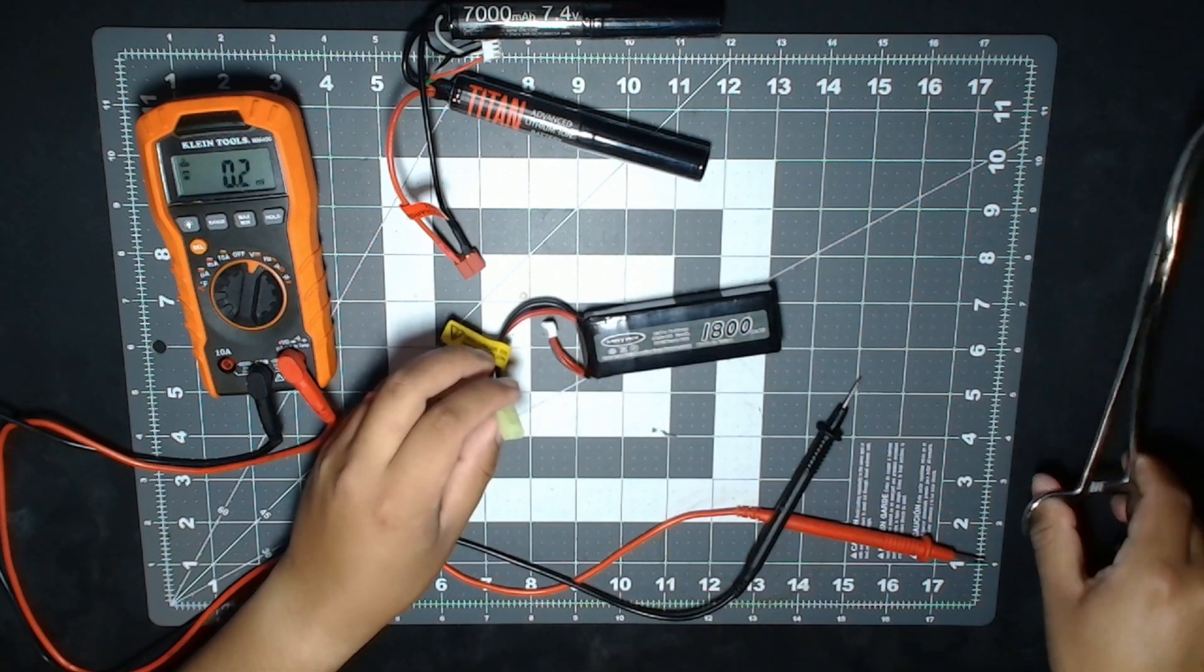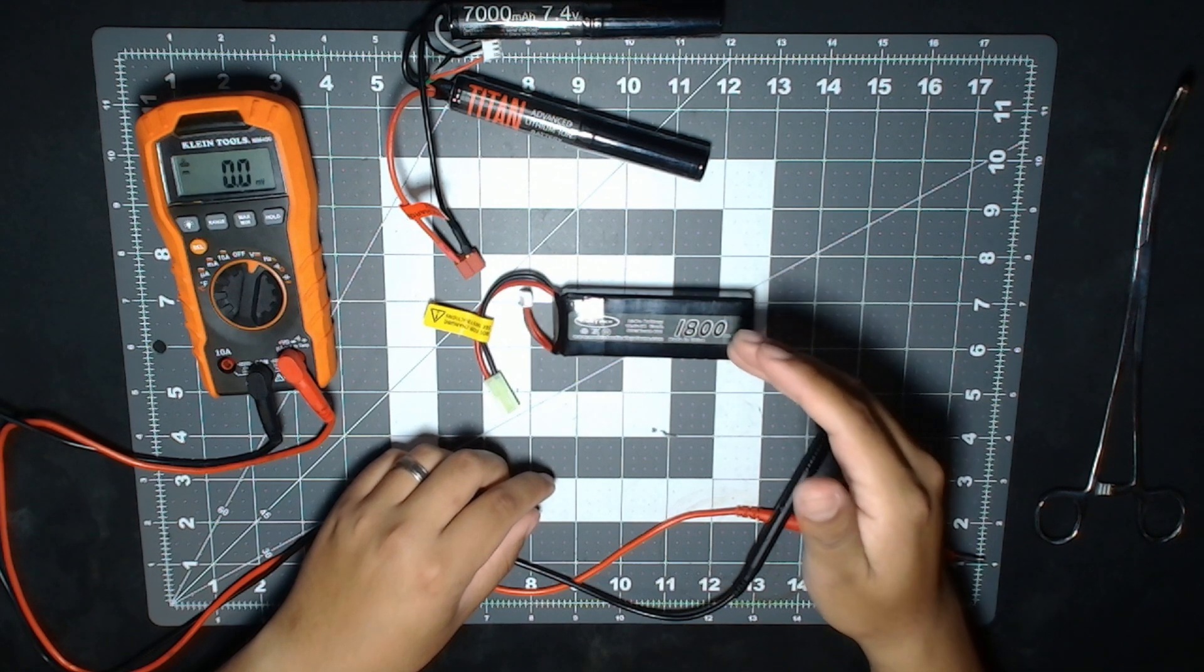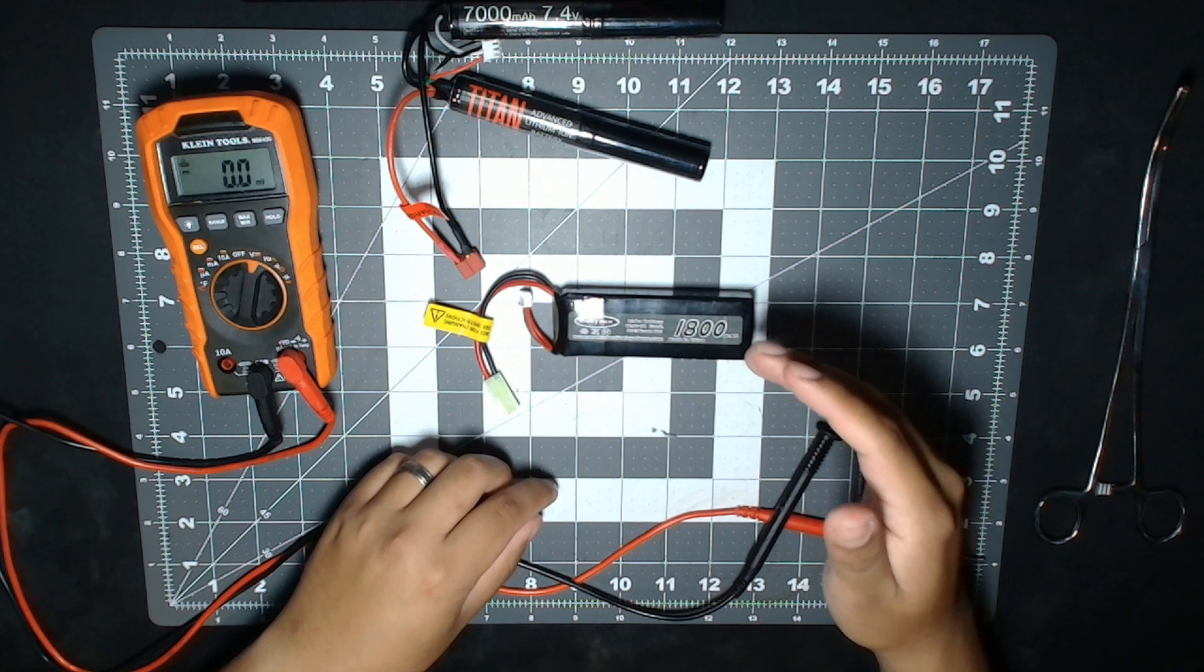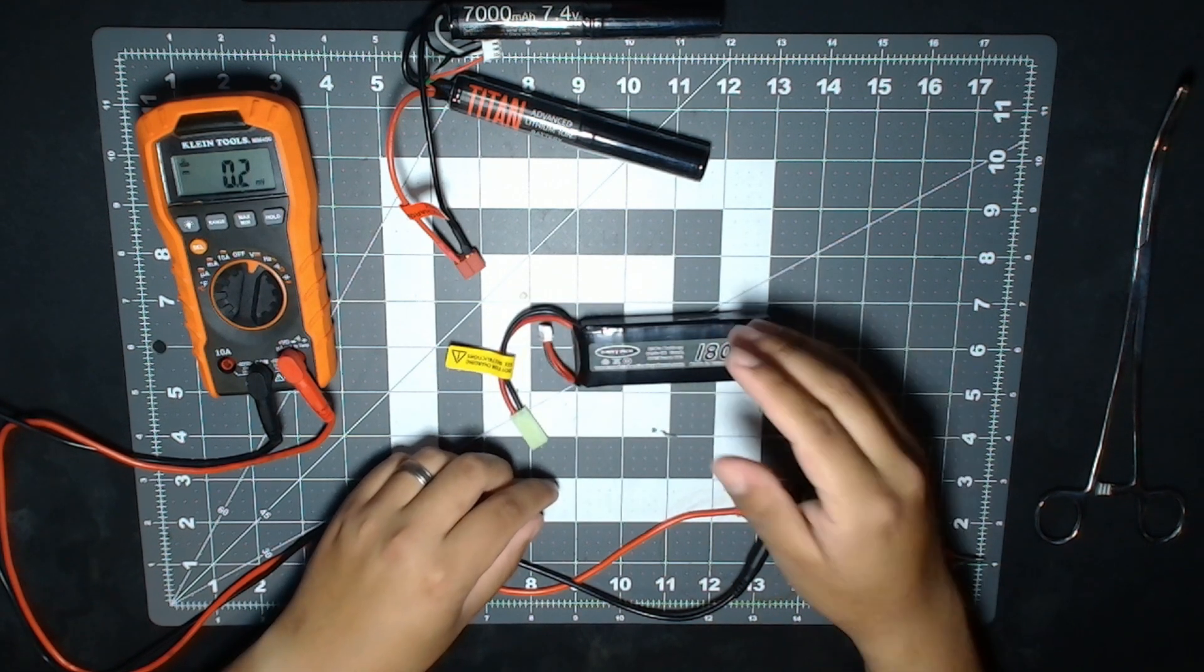For a three-cell battery, if you're doing 4.2 volts per cell which is the maximum, you should be getting 12.6 volts for a fully charged battery.